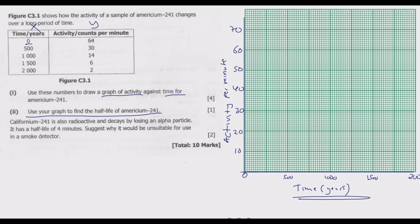The first point is (0, 64). At time 0, the count is 64. Then we have (500, 30), which is here. Then (1000, 14) - 14 is 4 subunits above 10. Remember, there are 10 subunits each. Finally, (2000, 2) is here. So we have these plotted points.